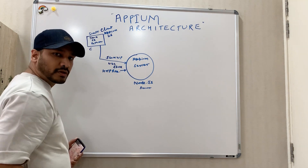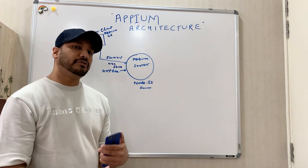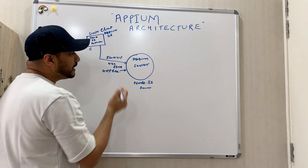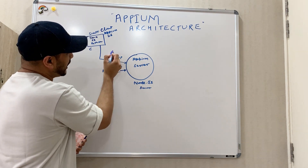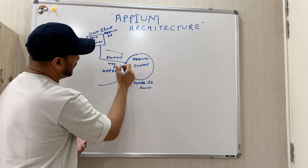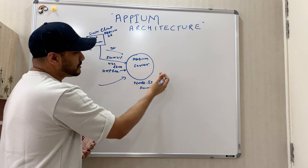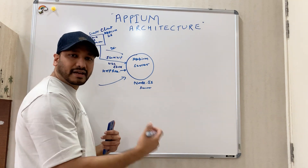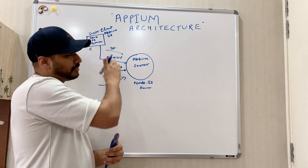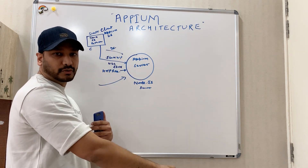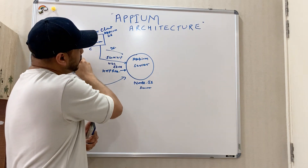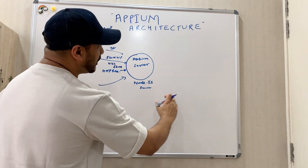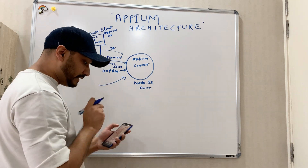The server is capable of understanding the request. Along with the request, we pass desired capabilities — things like on which device we want to run, what is the app package, activities, and other information. So the client will interact with the server through these desired capabilities and the HTTP request.